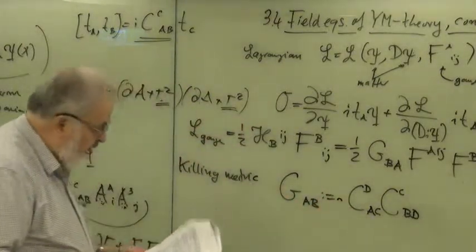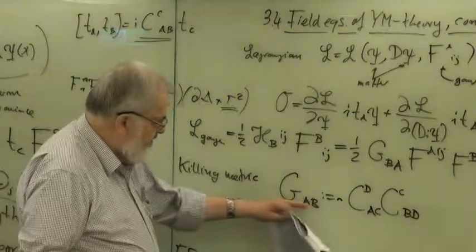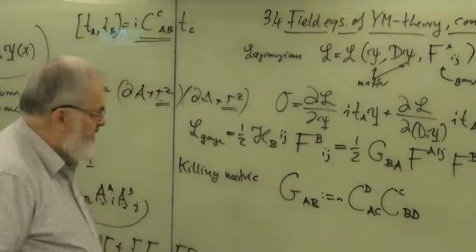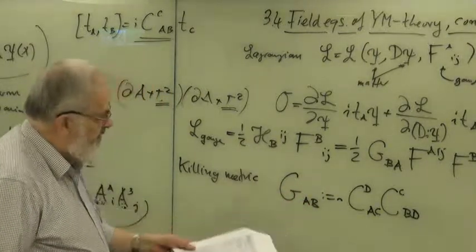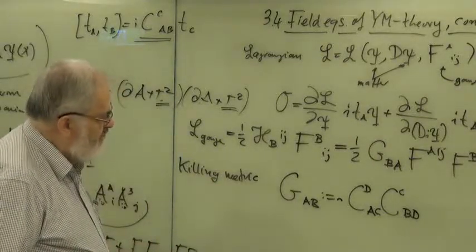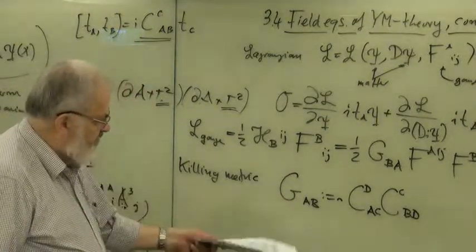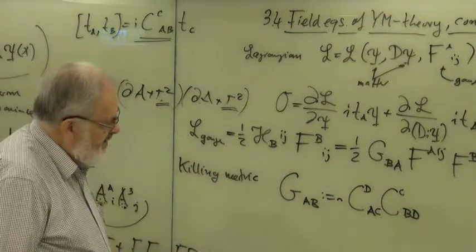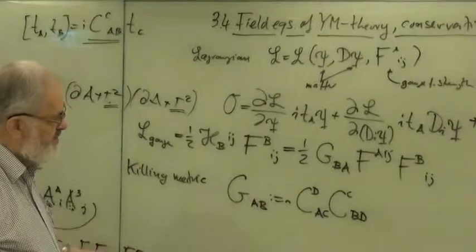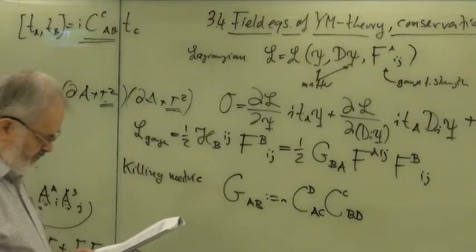Of course, this is a three times three matrix. And incidentally, the Killing matrix is non-degenerate. It's called a semi-simple group, and we assume always that we have semi-simple groups. If it's non-degenerate, it can be inverted, and you can develop a tensor calculus for the group. And this is what we need in physics. So it's semi-simple groups, non-degenerate Killing matrix which we use.